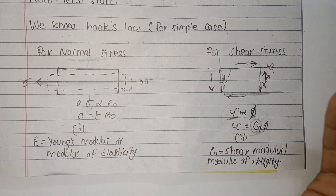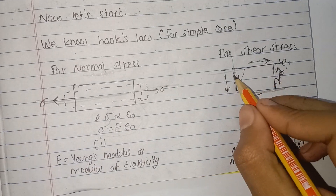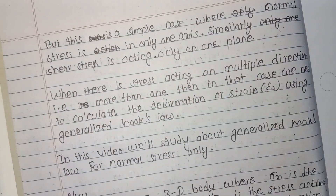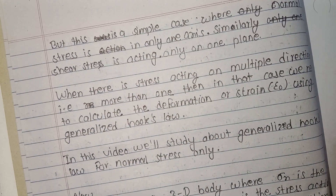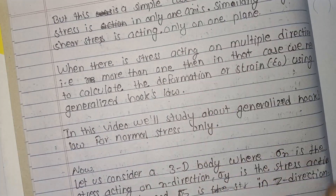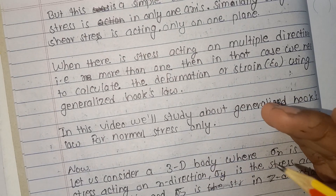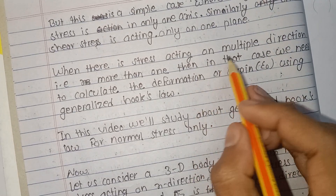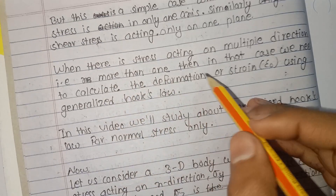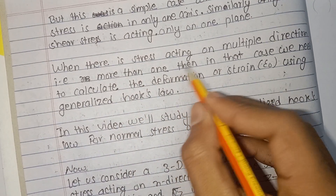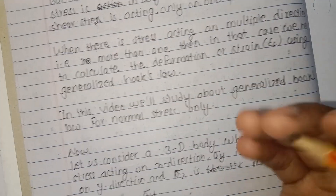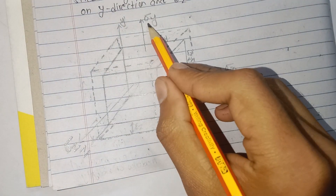When stress acts on multiple planes and multiple directions — particularly along the x-axis, y-axis, and z-axis — and this stress is acting on more than one direction, then we need to calculate the total deformation or strain in each direction.